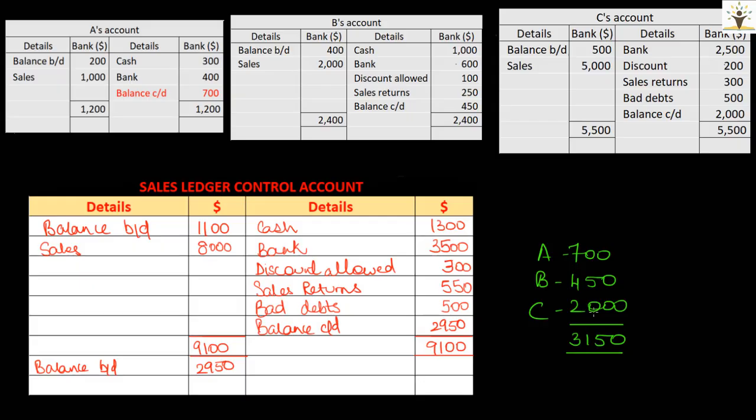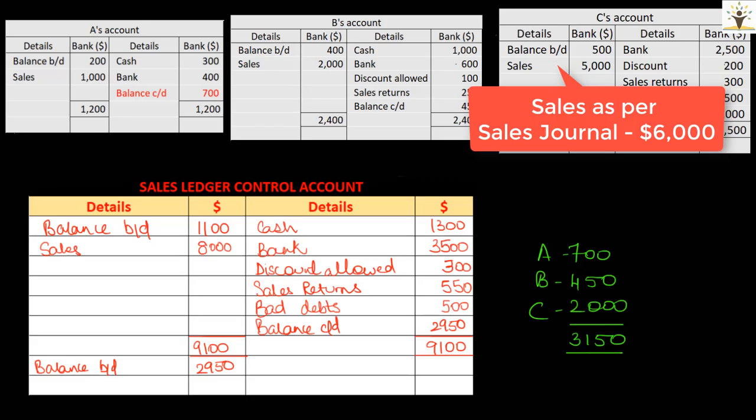For our first step, we summed up all the transactions of all the sales ledger accounts to prepare the sales ledger control account. However, doing this limits the use of the control account as it does not help in determining if any error is committed in the daybooks or in posting transactions from daybooks to the ledger. For example, assume that sales to C as per the daybooks was originally $6,000 but posted incorrectly to C's account as $5,000. The control account proved to be inefficient in determining that any error was actually done in posting the sales, because it was prepared using transactions from ledger accounts only.